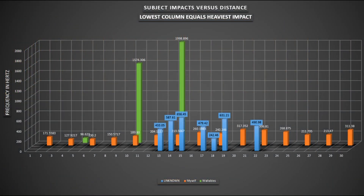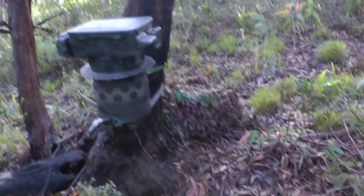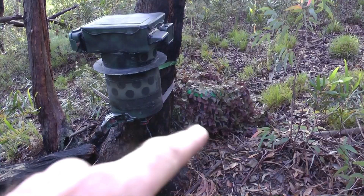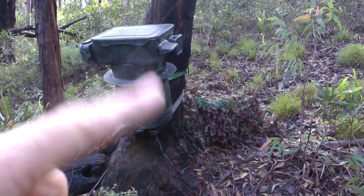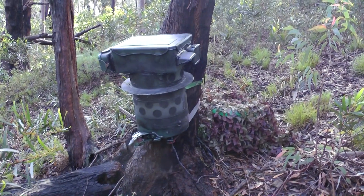This is the new chart showing multiple comparisons of the same subject at various distances compared to my footsteps at various distances. The unknown subject has blue columns, my footsteps are orange columns, and the wallabies are green columns. Whatever it is seems to be lighter than myself but heavier than a wallaby.